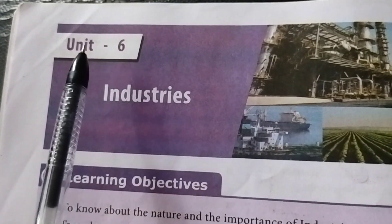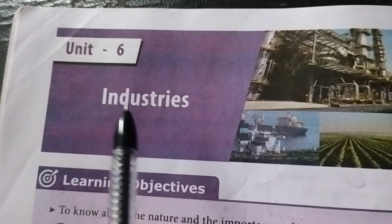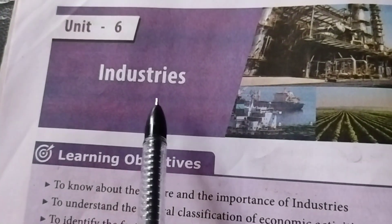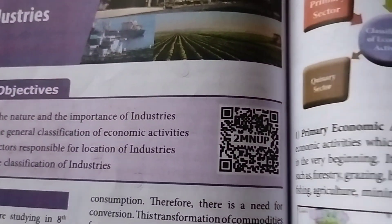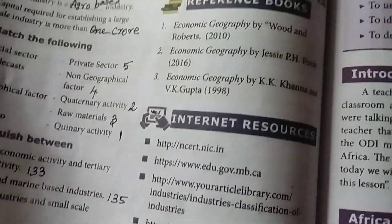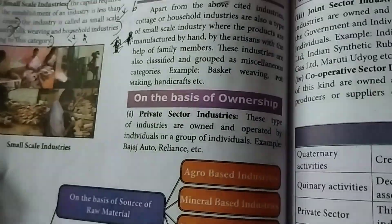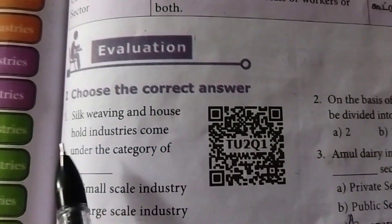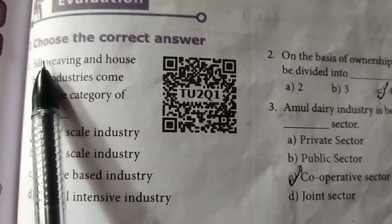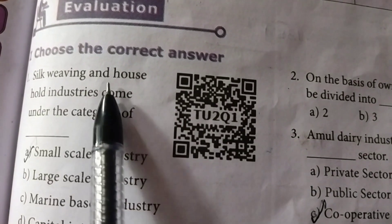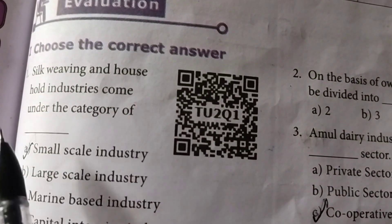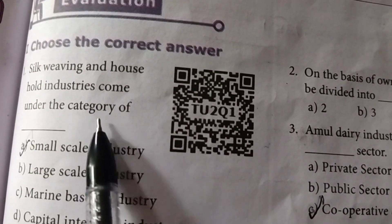8th standard Geography, Unit 6: Industries. In the lesson order, take page number 137. Evaluation, Roman numeral one: Choose the correct answer. First one — silk weaving and household industries come under the category of which industry?